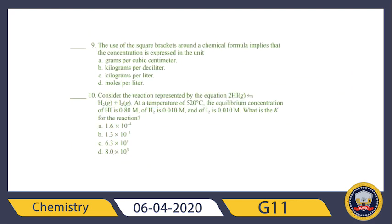Question nine: the use of square brackets around a chemical formula implies that concentration is expressed in which unit? Concentration is expressed in moles per liter — molarity. We always express concentration using molarity, which is moles per liter.